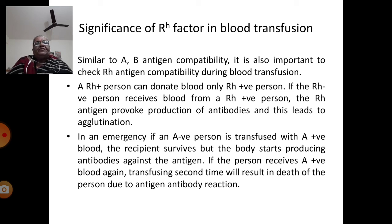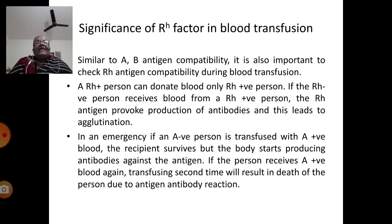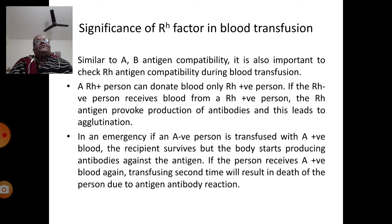In an emergency, if an A-negative person is transfused blood from an A-positive person, the recipient survives, but the body starts producing antibodies against the antigen. If the person receives A-positive blood again a second time, the second transfusion will result in the death of the person due to antigen-antibody reactions. This is where exactly the Rh factor plays a role in blood transfusion.